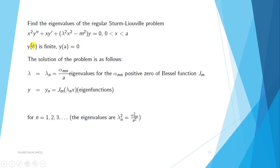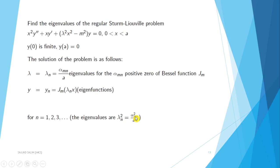Find the eigenvalues of the regular Sturm-Liouville problem: x squared y double prime plus x y prime plus (lambda squared x squared minus m squared) y equals 0, on the interval 0 less than x less than a, with y(0) finite and y(a) equals 0. The solution gives eigenvalues lambda n equals alpha_{mn} divided by a, where alpha_{mn} are positive zeros of the Bessel function J_m. The eigenfunctions are y n equals J_m(lambda n x), for n equals 1, 2, 3. The eigenvalues satisfy lambda squared n equals alpha squared_{mn} divided by a squared.